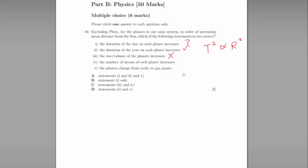The number of moons of each planet increases. Again, that's true up to a point, but there are planets further out, like Uranus and Neptune, that have fewer moons than, say, Jupiter and Saturn. So that one's not true.